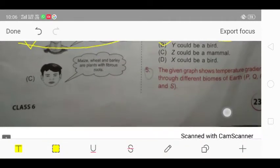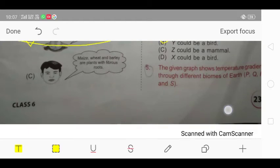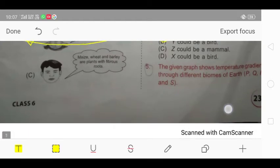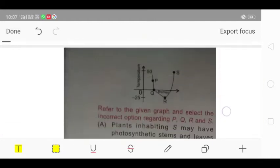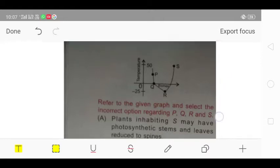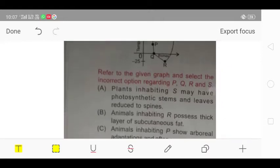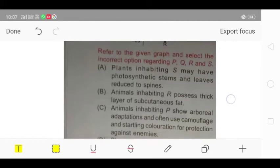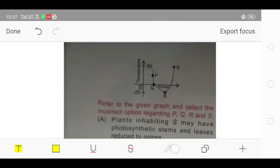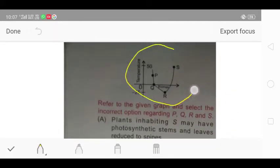Next is question number 5. The given graph shows the temperature gradient through different biomes of earth: P, Q, R, S. Refer to the given graph and select the incorrect option regarding P, Q, R, S. As you can see, this is the graph, and they have asked for the incorrect statement.